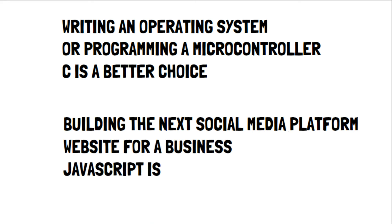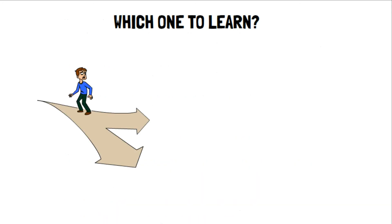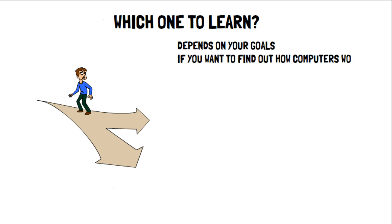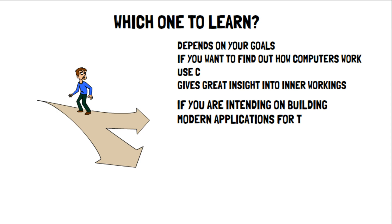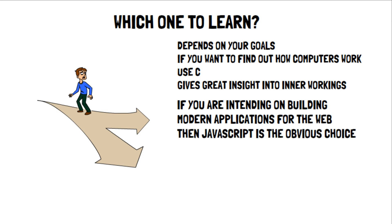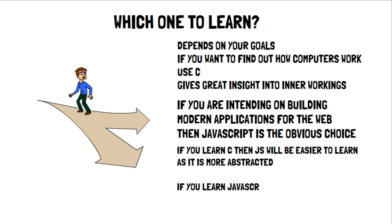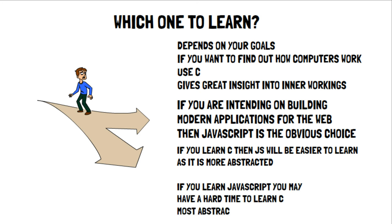If you are confused as to which one to learn, you need to pick based on your end goals. If you want to understand how the computer works at a low level, C is a great language to learn and will give you great insight into the inner workings of your machine. If your intention is to build modern applications that run on the web, JavaScript is the obvious choice. If you learn C first, JavaScript will be easier to pick up since it is more abstracted away from the hardware. On the other hand, if you learn JavaScript first, you may have a hard time learning C afterward, as you'll have all the abstraction you are accustomed to stripped away.